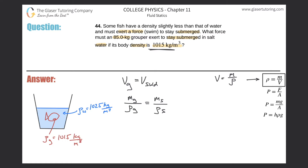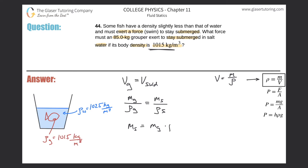We know three of the four values: mass of the grouper, density of the grouper, and density of the salt water. The unknown is the mass of the displaced salt water. Solving algebraically, mass of displaced salt water = (mass of grouper × density of salt water) / density of grouper.